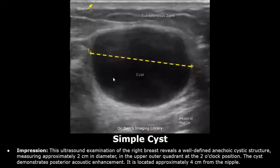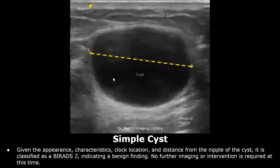In the impression, you can mention the well-defined anechoic cystic structure and then write its size. After that, you can write its location while also mentioning the distance from the nipple. Then you can write the BIRADS score. Given the appearance, characteristics, clock location, and distance from the nipple of the cyst, it is classified as BIRADS 2, indicating a benign finding. No further imaging or intervention is required at this time.